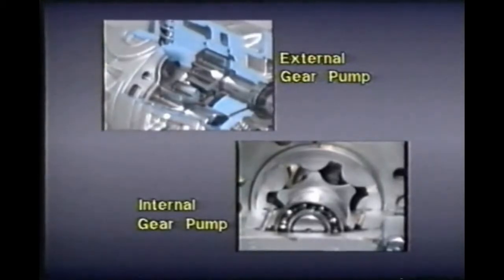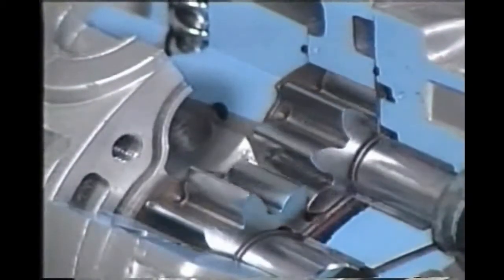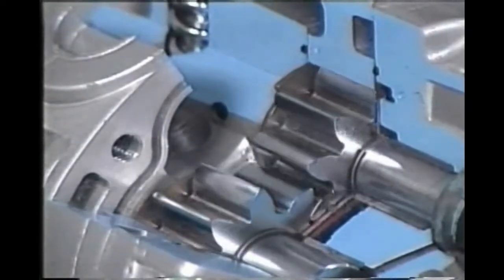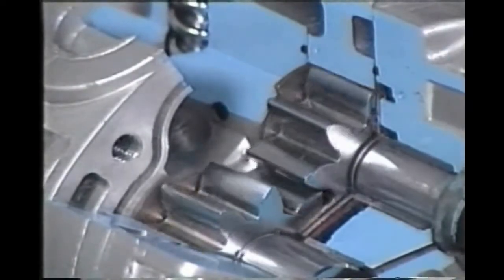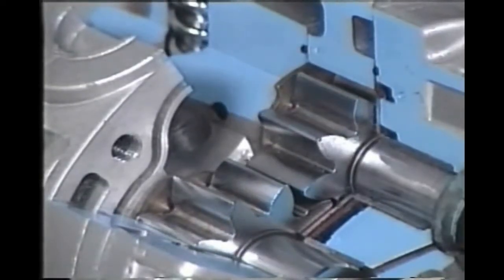Now let's look at the gear pump. These simple, economical pumps use two gears that turn and mesh inside a tightly fitting housing. There are two kinds: external gear pumps and internal gear pumps. The teeth of the external gear pump, often called a spur gear pump, take fluid from the pump inlet and carry it between the teeth and the housing, then discharge it through the outlet port.